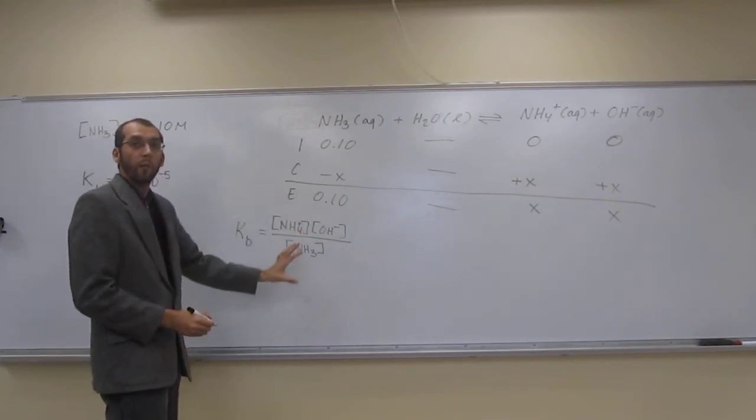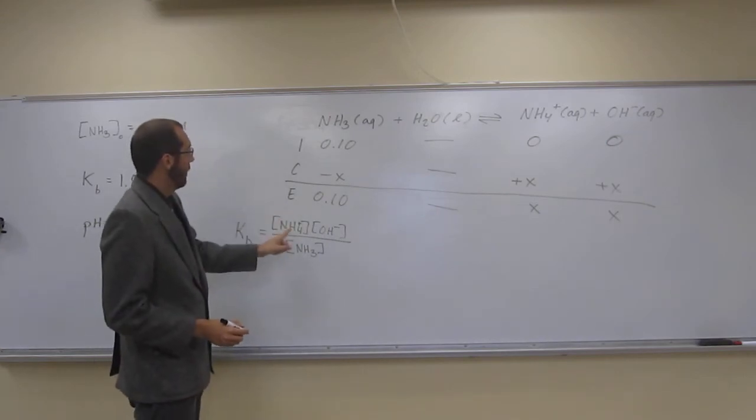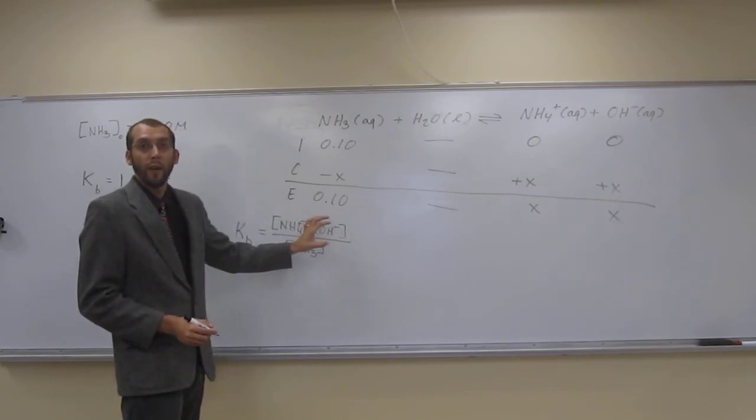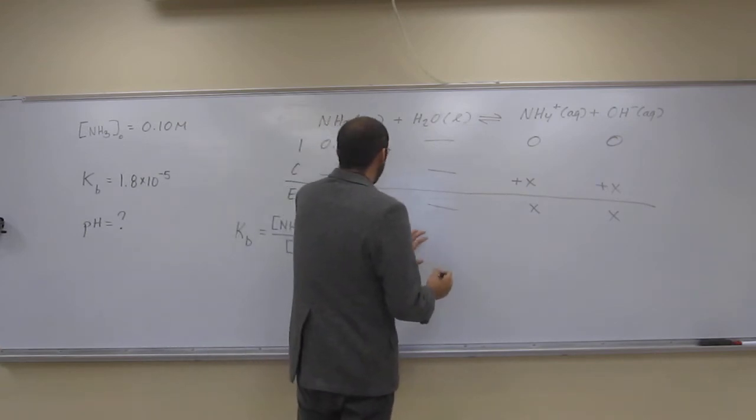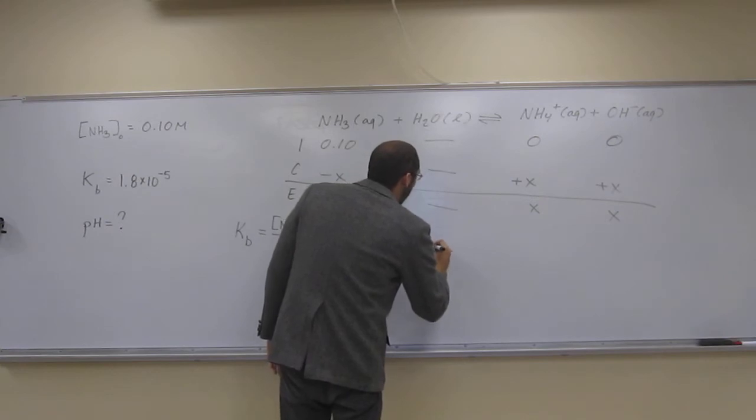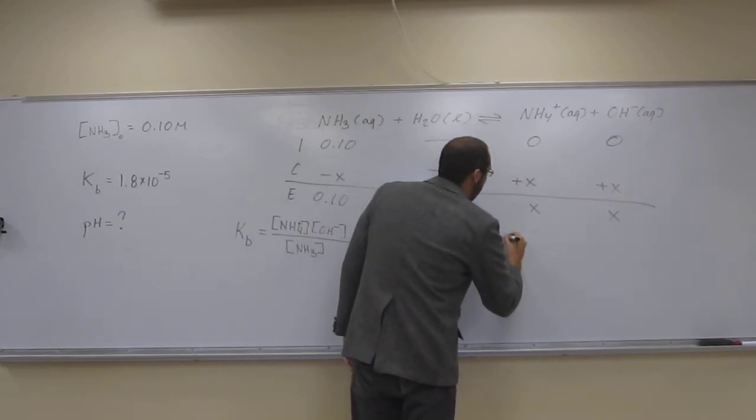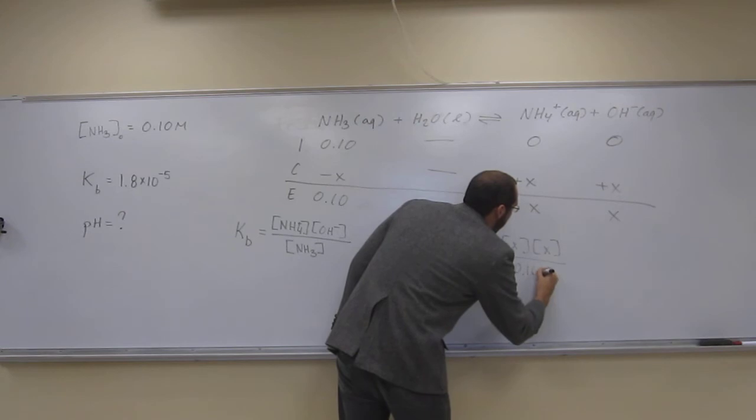So is everybody set with that one? Now let's just plug in our numbers. Well, this is X, and this is X, right? So we're going to actually be solving for X squared, which is what we'll be doing. Let's just plug in our numbers. So we'll rewrite this equation to say 1.8 times 10 to the negative 5 equals X times X divided by 0.10.